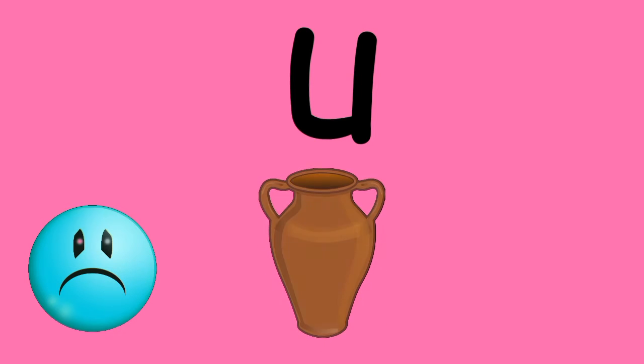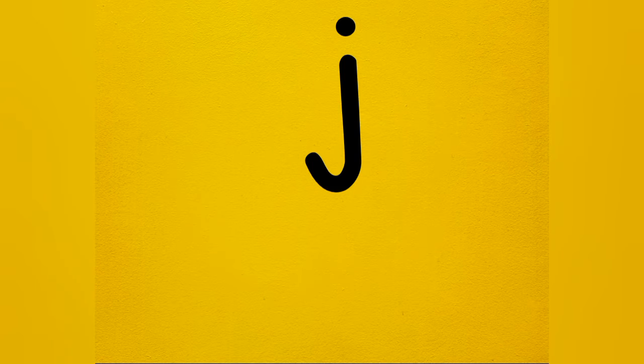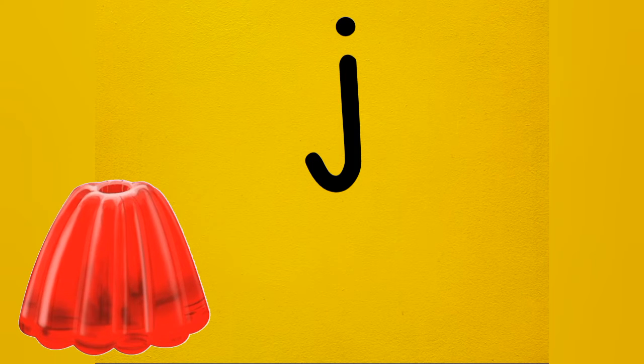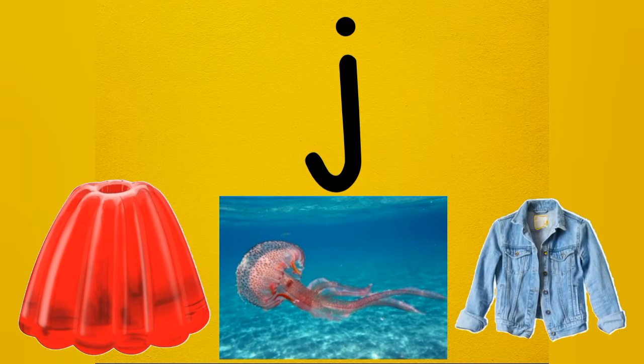U — Unhappy. U — Urn. U — Vampire. B — Jellyfish, Jacket.